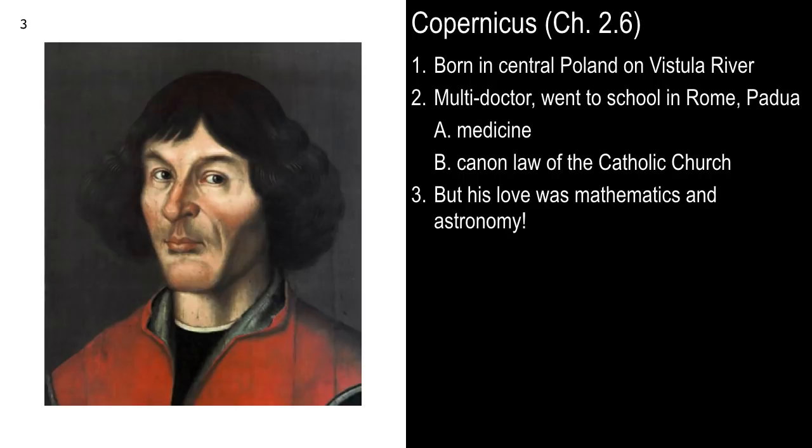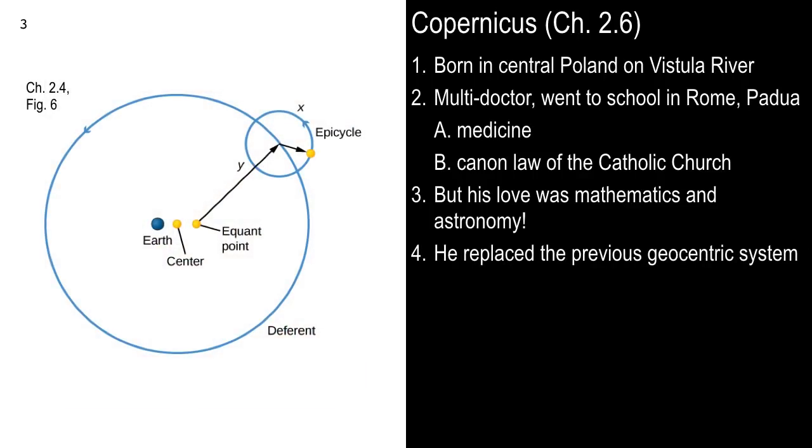One of the things that he studied was the existing thought, which traced all the way back to the ancient Greeks: Aristotle, Plato, and a famous Alexandrian Greek named Ptolemy. Ptolemy had erected and figured out this mathematical system that explained the motion of the planets as moving in circular patterns around the Earth. Here's a picture from chapter 2.4, figure six. This is the geocentric view. The planet is up there, that yellow dot on the epicycle. There's all kinds of extra circles, equants, deferents. It was pretty complicated, but it worked.